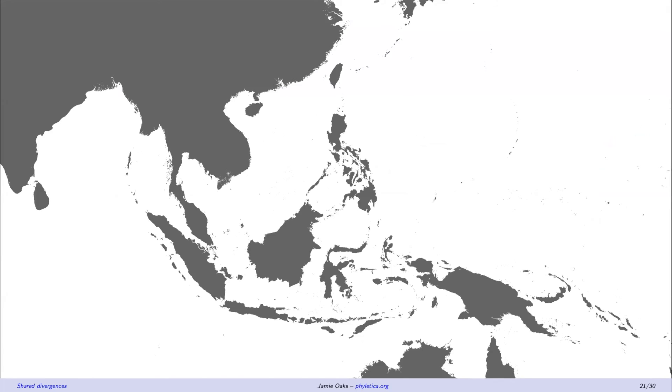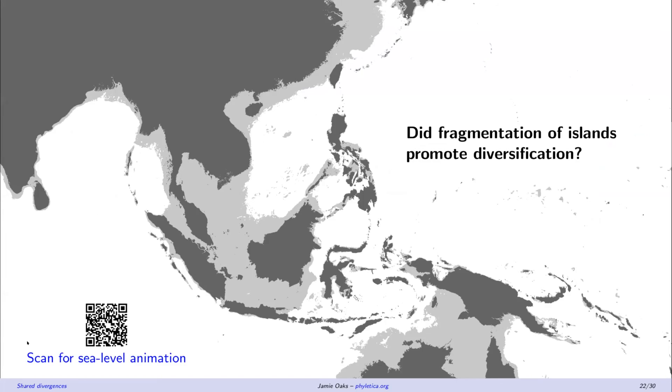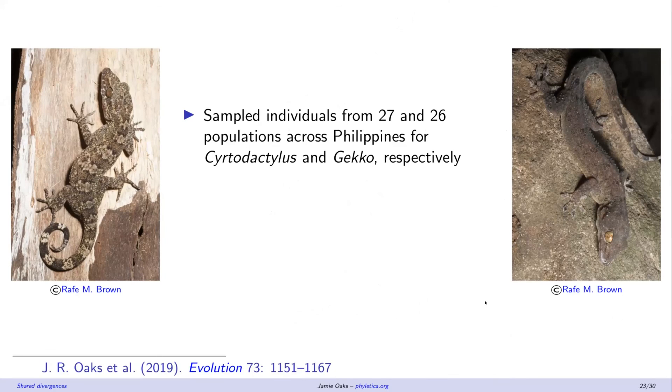Okay, very briefly, we applied this to some lizards from the Philippine islands. And these islands have been fused together and fragmented repeatedly over the past 4 to 5 million years. And so we really want to get at this question that the fragmentation of these islands drive diversification. And if you want to see an animation of this, you can go ahead and scan that QR code. But I'm going to keep going, running out of time.